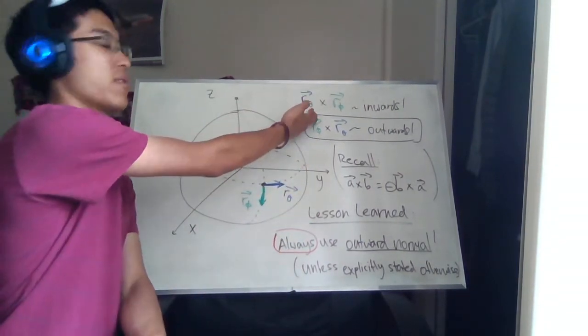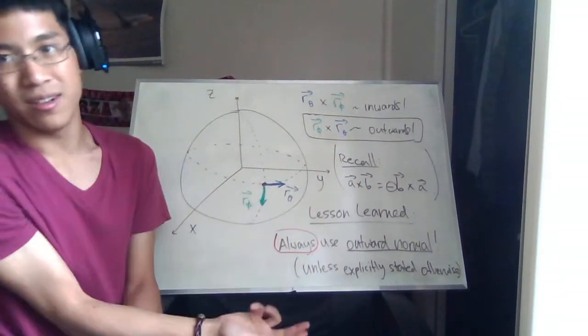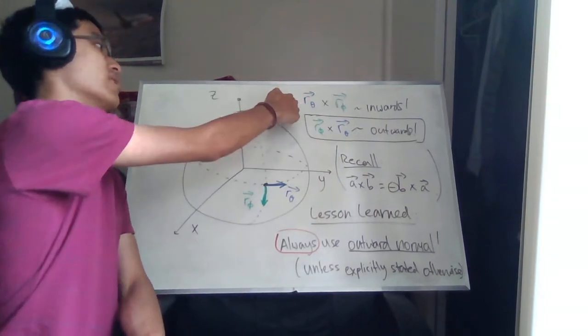In lecture I used rθ cross rφ, but it's actually supposed to be rφ cross rθ. That one's outwards, the one I used is inwards.